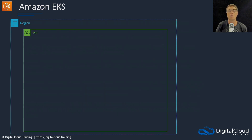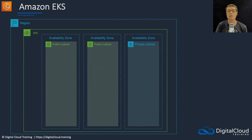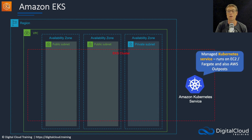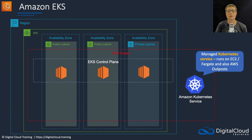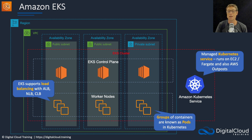Let's look at an example infrastructure with EKS. We have multiple AZs with subnets and an EKS cluster running on top. The managed Kubernetes service runs on EC2 and Fargate, and also on AWS Outposts. You have the EKS control plane and then worker nodes. EKS supports load balancing with the ALB, NLB, and CLB. Groups of containers are known as pods in Kubernetes.